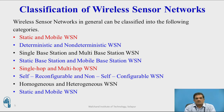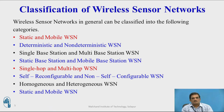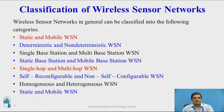In self-reconfigurable wireless sensor networks, nodes have self-reconfigurable capability, while non-self-configurable networks lack this feature. In homogeneous wireless sensor networks, all sensors have similar hardware and software configurations. In heterogeneous wireless sensor networks, different sensors have different hardware and software configurations. Mobile wireless sensor networks, where nodes move from one location to another, are sometimes also called ad-hoc wireless sensor networks.